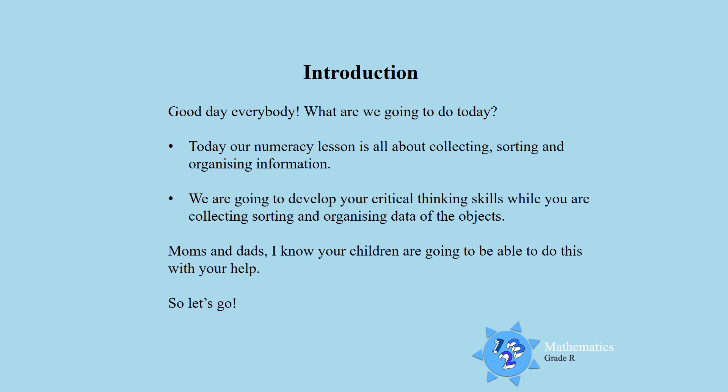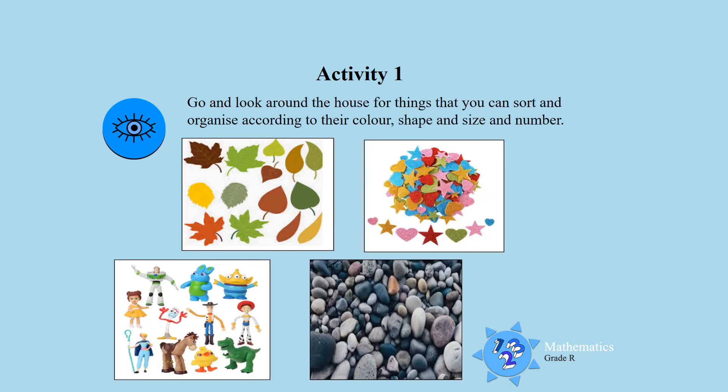So let's go! Activity one: I want you to go and look around the house for things that you can sort and organize according to their color, their shape, their size and number. So go boys and girls, look around the house to find any objects that you can sort.